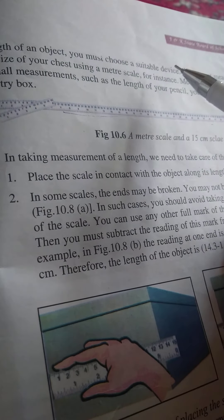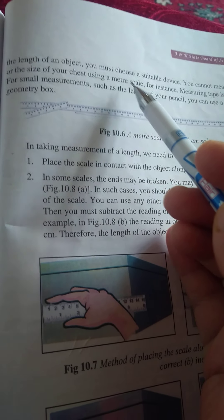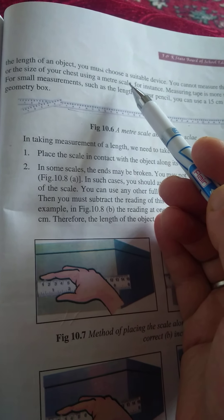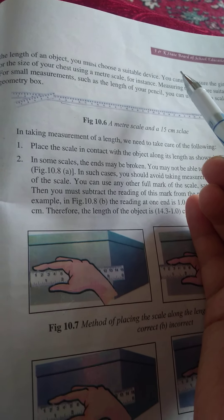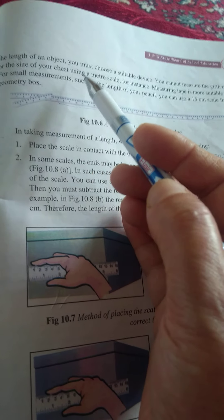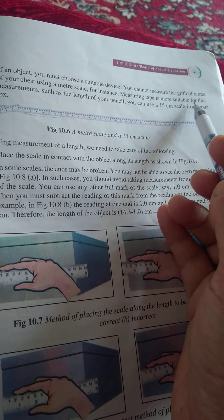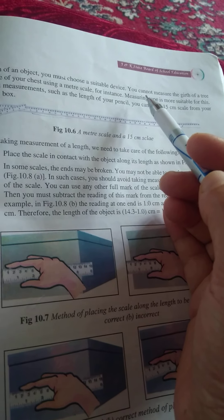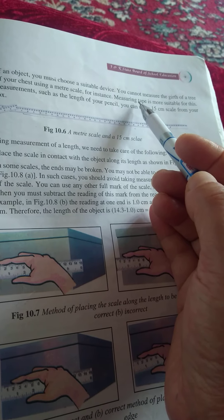For measuring the length of an object, you must choose a suitable device. You cannot measure the girth of a tree or the size of your chest using a meter scale. For instance, measuring tape is more suitable for this.